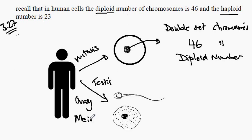This means that the cell, the sperm cell or the egg cell, only contains a single set of chromosomes, that is 23.